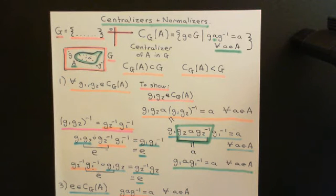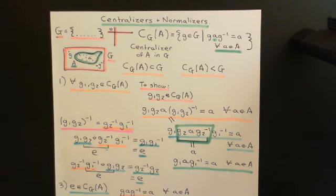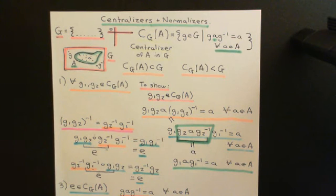Welcome back to this next video in which we are discussing centralisers and normalisers. We've just been discussing centralisers, and before we move on to normalisers, I'd like to add a few more points. The first is with regards to what happens if the group we're working in is an abelian group, because then centralisers actually become the entire group.